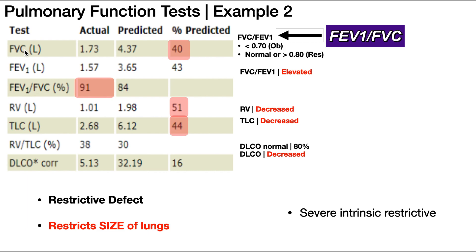The FVC, or forced vital capacity, is basically the amount of air that you can forcibly exhale after a maximal inspiration. So if you breathe in as much as you possibly can, the machine is going to measure from that point how much you can actually exhale until you can't exhale anymore. That's the forced vital capacity.